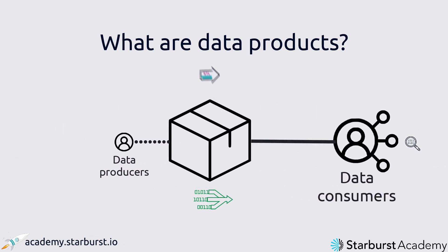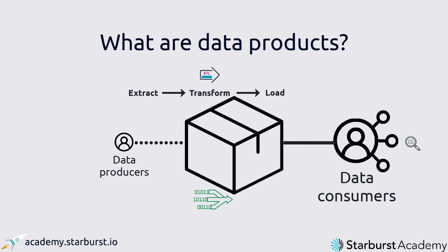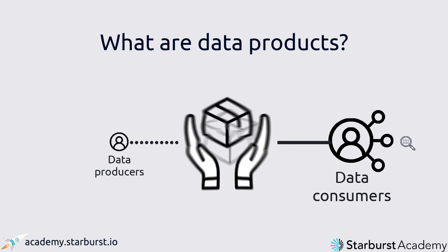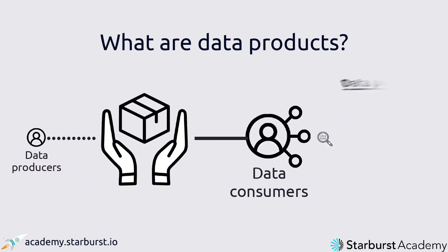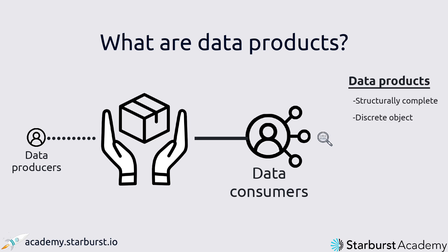In the past, data pipelines existed as a complex patchwork of different technologies working as a kind of relay system, moving data through different stages until complete. Data products bundle all of this together and allow users to interact with their data as discrete, independent entities. This means that each data product has all of the structural components to do its job as a discrete object, and access to the data product should give you all the information you need to gain insights.